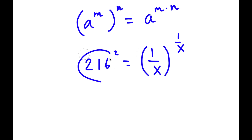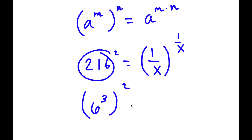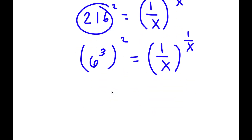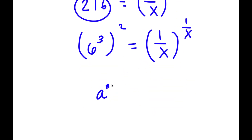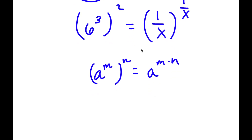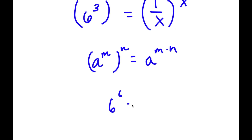Now 216 is the same thing as 6 to the power of 3. So I have 6 to the power of 3 to the power of 2 is equal to 1 over x to the power of 1 over x. Applying the rule a to the power of m to the power of n equals a to the power of m times n, I get 6 to the power of 6 is equal to 1 over x to the power of 1 over x.